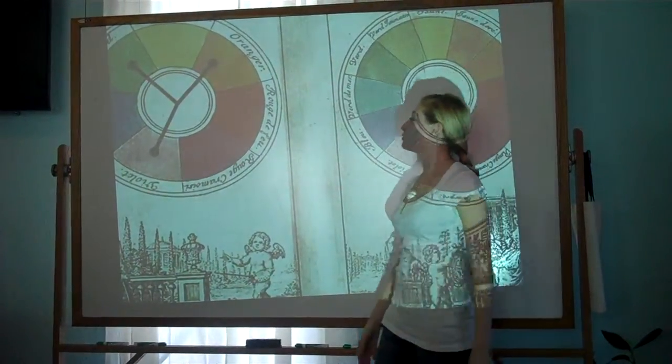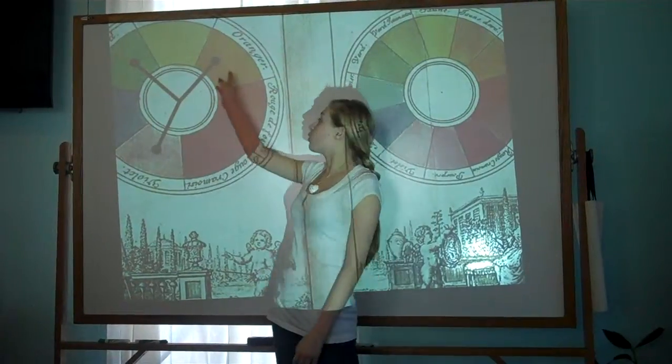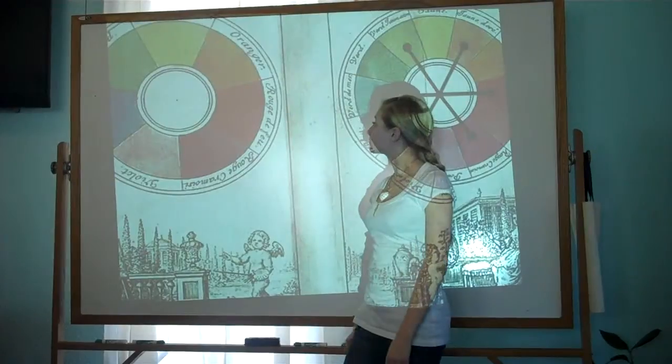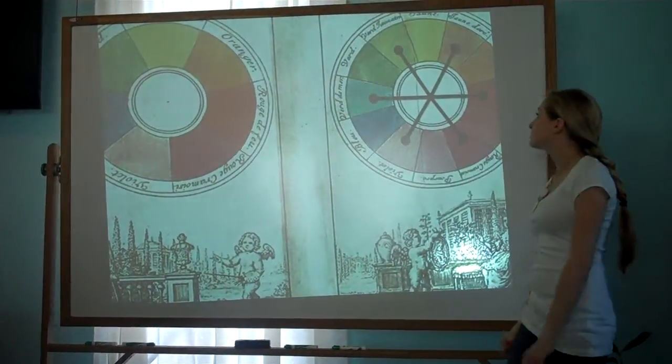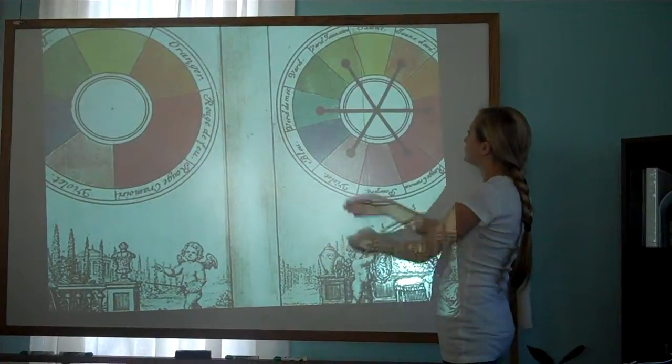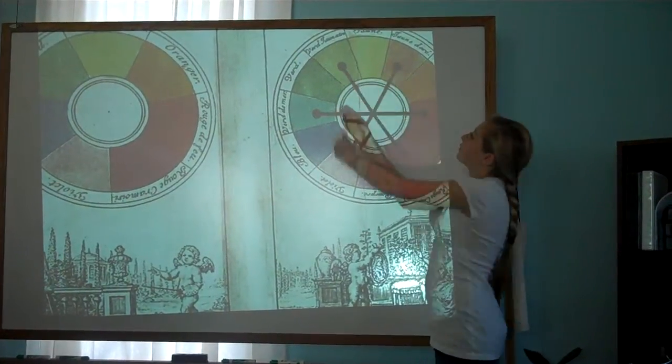Then the color wheel goes to the secondary colors, which are orange, green, and purple. Last are the tertiary colors. The tertiary colors are between primary colors and secondary colors.